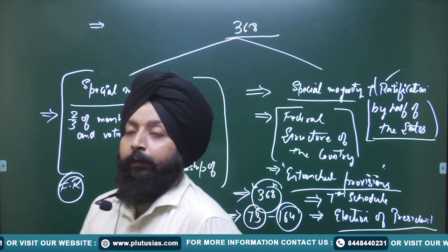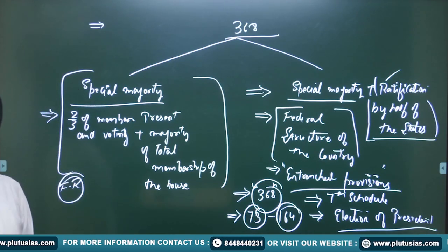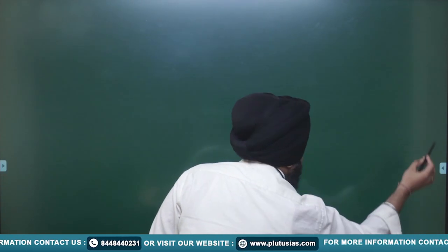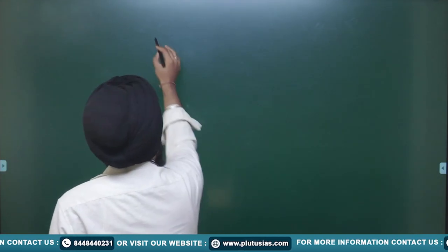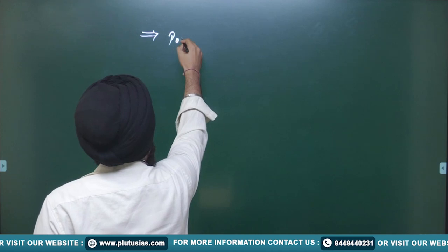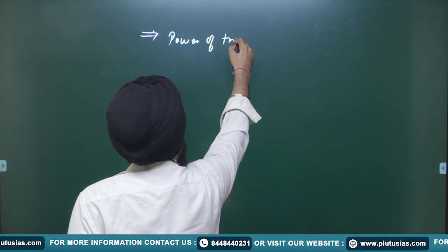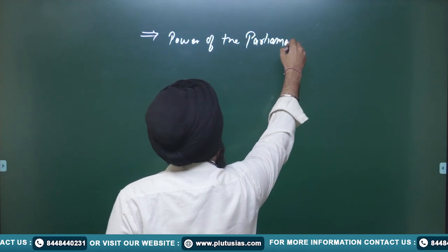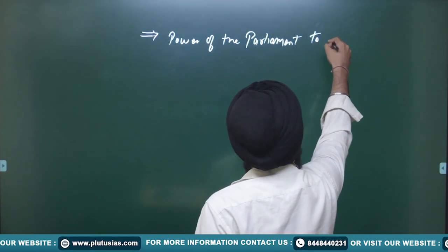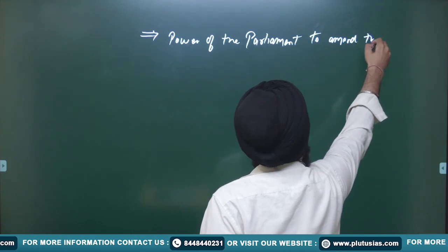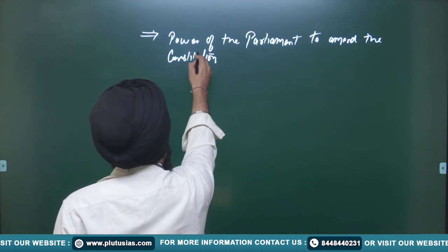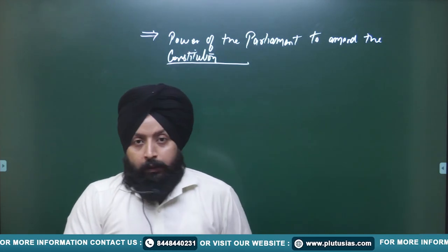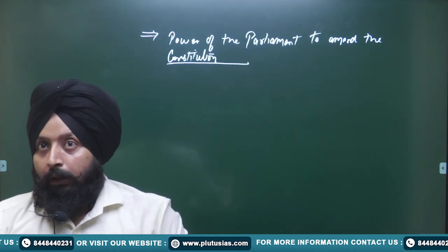All other provisions not covered by the third method (simple majority) or this entrenched method can be amended by two-thirds of members present and voting plus majority of total members. Even fundamental rights can be amended by this method. But the question arises: can the parliament even amend fundamental rights? Does parliament have the power to amend fundamental rights? This is the major question — the power of the parliament to amend the constitution, or justiciability of constitutional amendment.